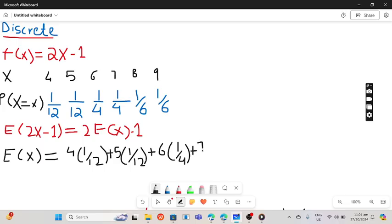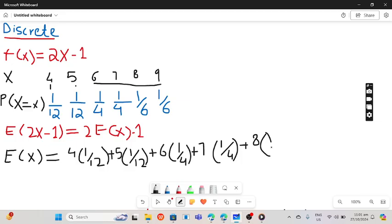Plus 7 multiplied by 1 by 4. We are just multiplying this, this, and carry on. So it is an easy way to do this. 7 plus 8 multiplied with 1 by 6.